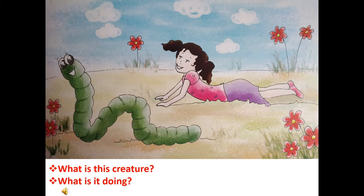The next question is: what is it doing? If you look at the picture carefully, this creature is trying to move from one place to another. So what is it doing? This creature needs to crawl to move from one place to another. This creature needs to crawl.